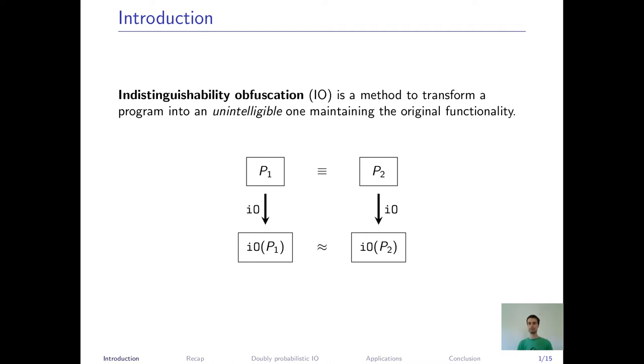Unintelligible here means that if we have two programs, p1 and p2, that have the same input-output behavior, so that compute the same function and we obfuscate them, then their obfuscations are guaranteed to be indistinguishable.